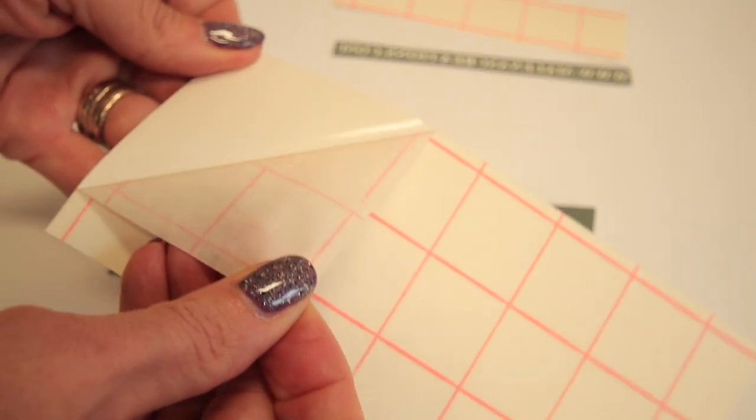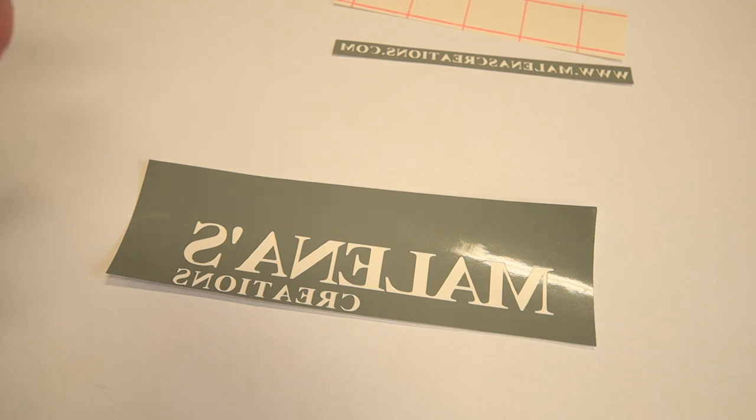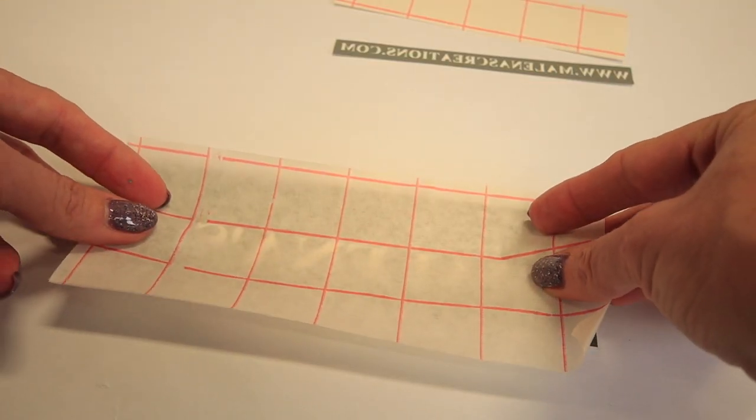Alright, next we're going to peel back our transfer paper and we're going to carefully pull this back because you don't want it to curl up on you. Then next we're going to just lay that right on top of our vinyl.